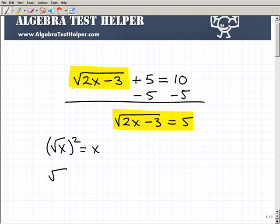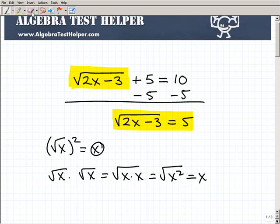I get x, because the square root of x times the square root of x is the same thing as the square root of x times x or the square root of x squared or x. So I kind of just use this basic example and did it the long way just to convince you that if I square the square root of something, I just get back to whatever is inside the radical.